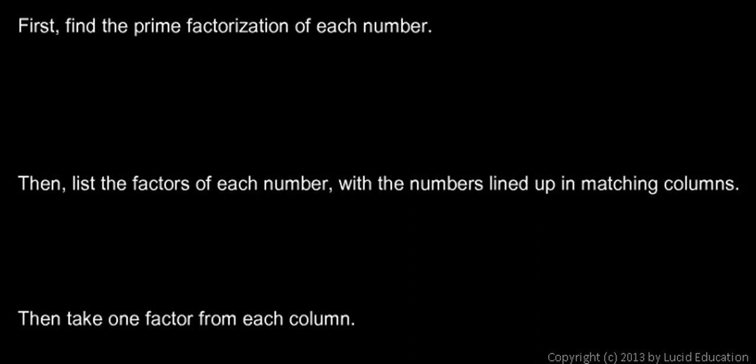So let's start with 84, and let's find the prime factorization. Let's see if we divide by 2, 84 divided by 2 is 42. We can divide 42 by 2, and we get 21. And 21 won't divide by 2, but it will divide by 3 and leave us with 7. So 84 factors as 2 times 2 times 3 times 7.